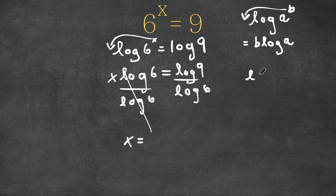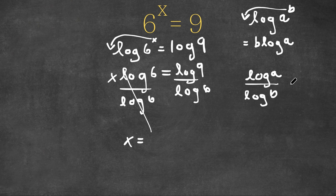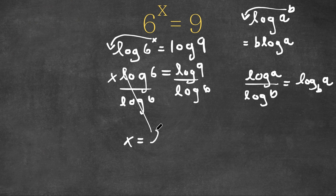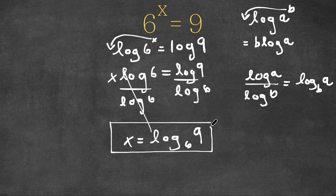However, if we have a logarithm in the form log a over log b, this is also equal to log base b of a. So we can think of 9 as a and 6 as b, meaning x would equal log base 6 of 9. So this is our answer.